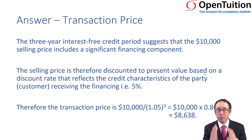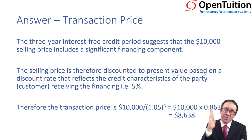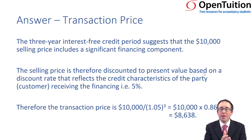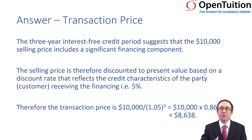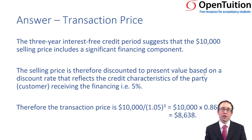The transaction price on the car — eight thousand six hundred and thirty-eight — will be recognized immediately, but then the interest income will be recognized over the life of the contract using some form of amortized cost methodology.